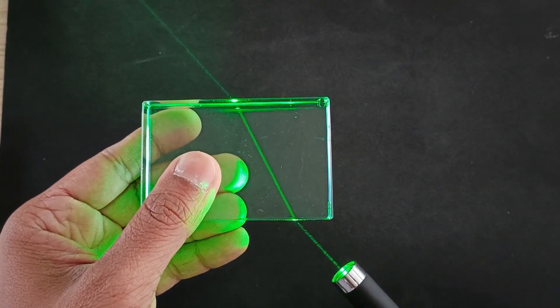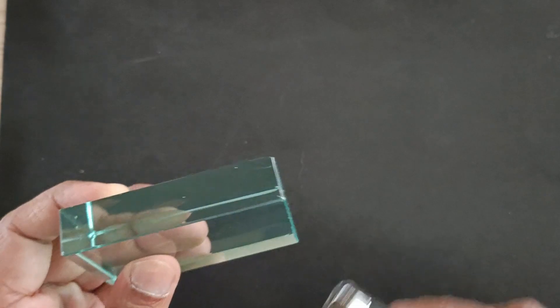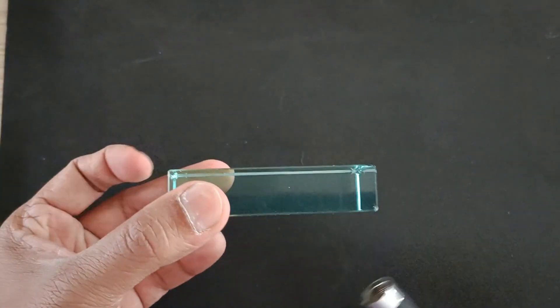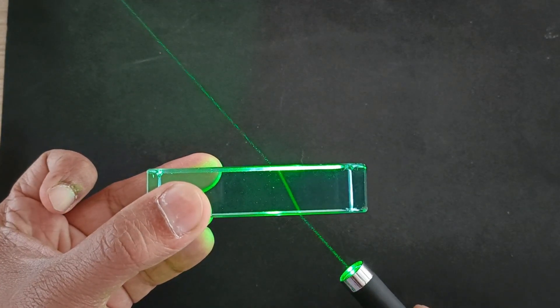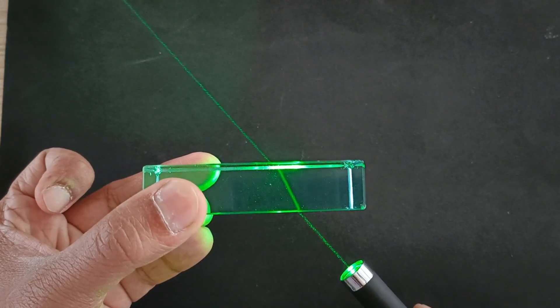We can very well see that the lateral shift depends upon the thickness of the glass slab. More the thickness, more is the lateral shift. By the way, the thickness is the perpendicular distance between two surfaces through which the light passes.